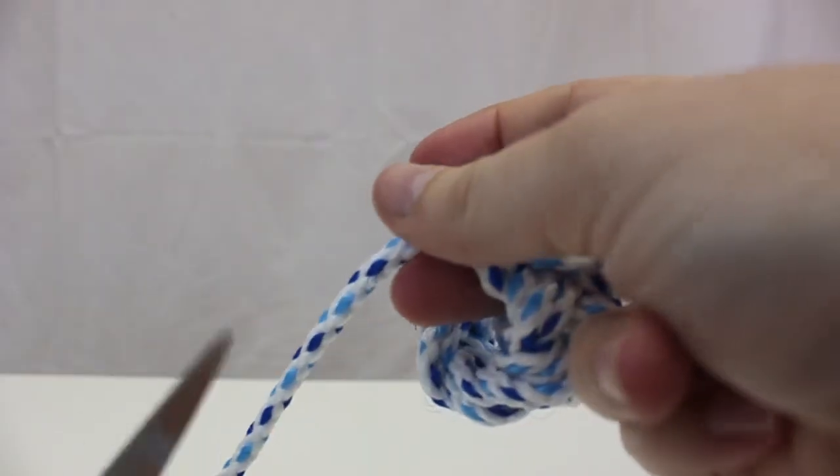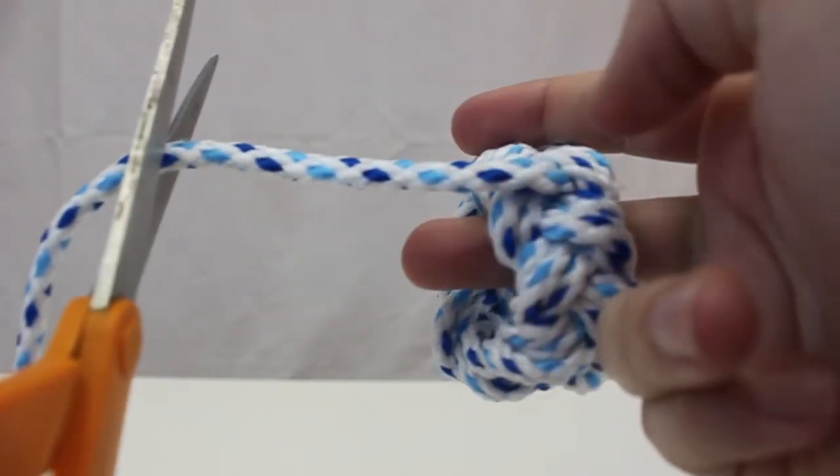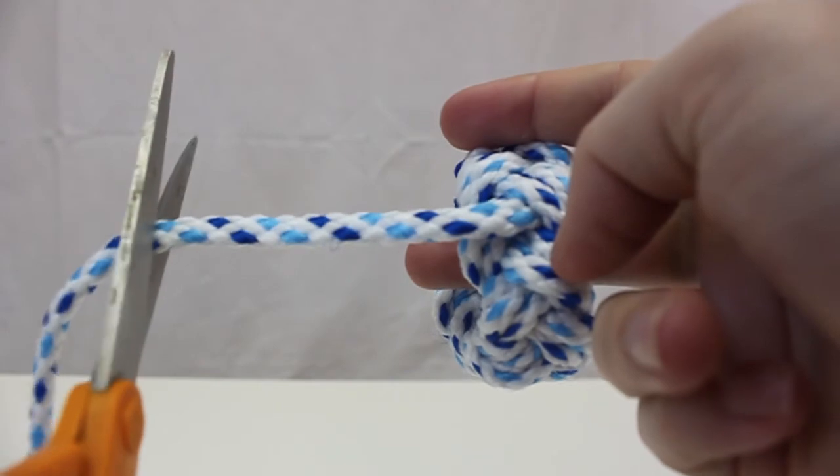Then just clip off the ends of your cord and you can tuck under the bracelet or even use a little bit of glue to hold.